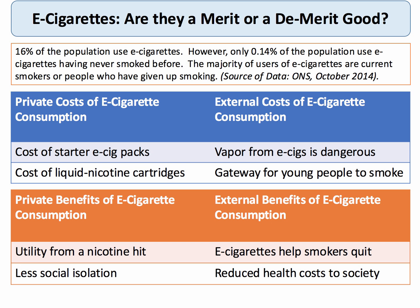Evidence suggests e-cigarettes may be an effective substitute to help smokers quit. In the long run, if people smoke less, that might reduce health costs to society, benefiting NHS and taxpayers. There is a genuine debate about how to value and measure these externalities and where the balance of costs and benefits lies. The economics — and politics — are fascinating.